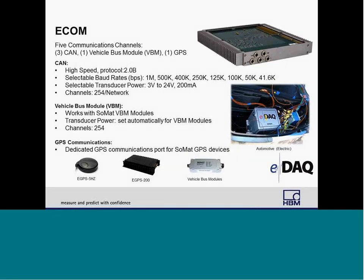The eCAM layer is a five-port communication layer with three CAN ports, one vehicle bus port, and one GPS port. The CAN port, which is Protocol 2.0B, has selectable baud rates from 41.6 kilobits per second to 1 megabit per second. It has the ability to power CAN-based transducers, such as the SOMAT-CR, with 3 to 24 volts. You can log up to 254 CAN messages per port.